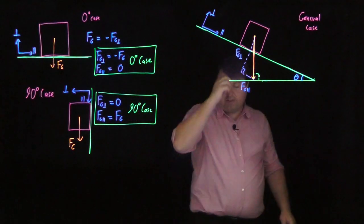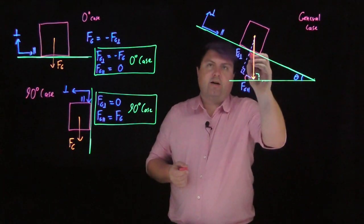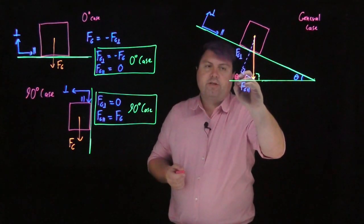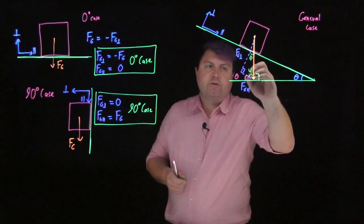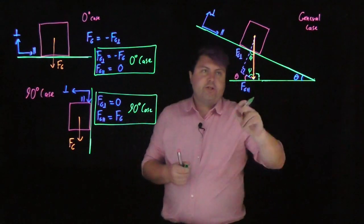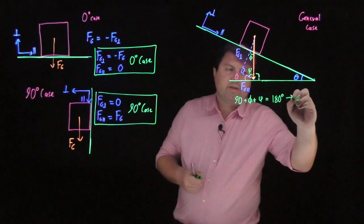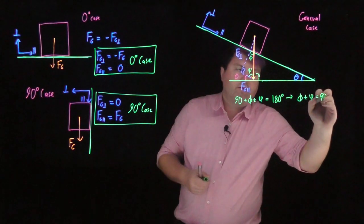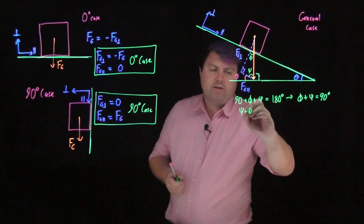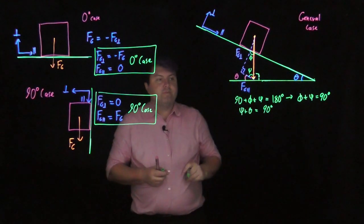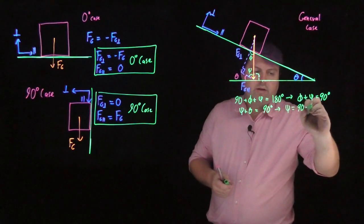We could figure it out from just these two cases, but let's look at representative angles. The first thing to notice is that this line and this line are parallel to each other, so this angle is also theta. We can label two new angles: phi and psi. These are the three internal angles, so 90 plus phi plus psi equals 180 degrees, or phi plus psi equals 90 degrees. Also, psi plus theta has to equal 90 degrees, so psi equals 90 minus theta.